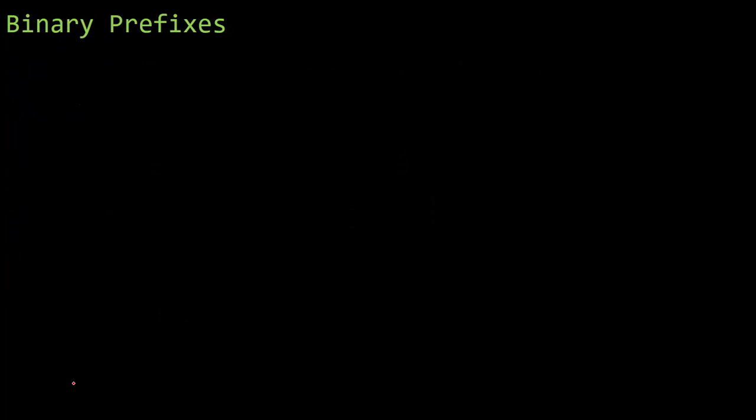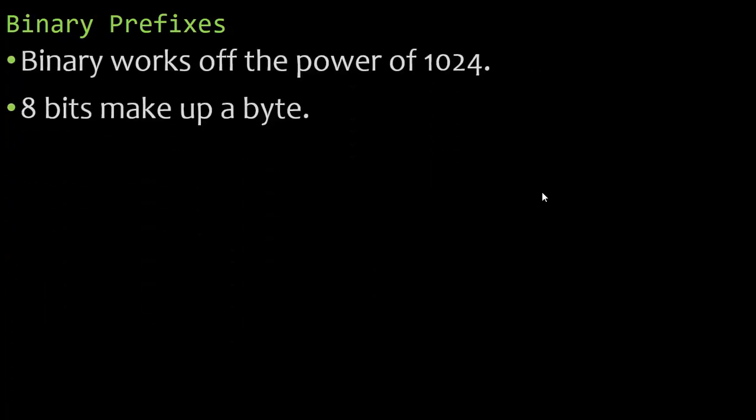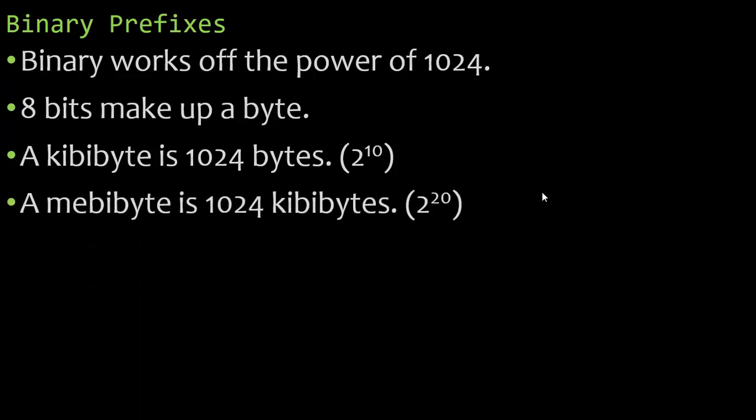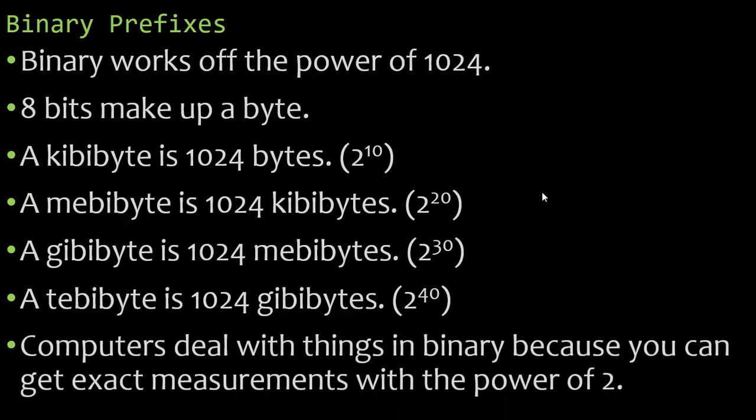The binary prefixes work a little different. Binary works off the power of 1,024. For example, I can take 2 to the power of something and get 1,024. I cannot take 2 to the power of something and get all these numbers. So 8 bits make up a byte. A kibibyte is 1,024 bytes, working off 2 to the power of 10. A mebibyte is 1,024 kibibytes, working off 2 to the power of 20. A gibibyte is 1,024 mebibytes, working off 2 to the power of 30. A tebibyte is 1,024 gibibytes, 2 to the power of 40. Computers deal with these things in binary because you can get exact measurements with the power of 2 when we're talking about whole numbers.